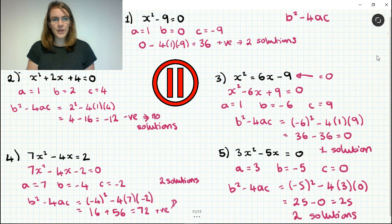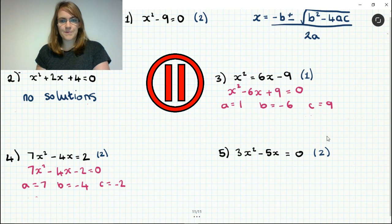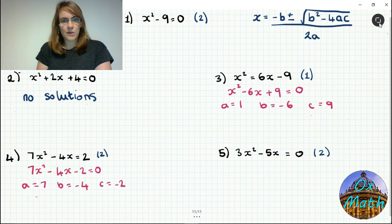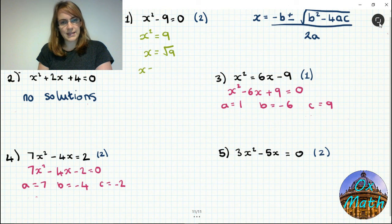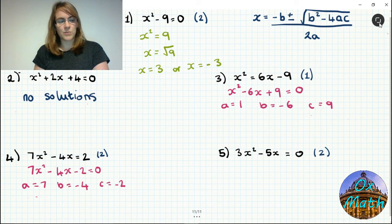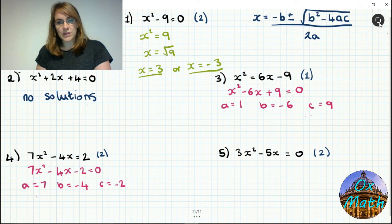Now pause the video and solve these equations. If they factorize, use factorizing; if not, use the quadratic formula. For the first equation there's no x term: we can rearrange to x squared equals 9, then x equals the square root of 9, giving x equals 3 or x equals minus 3. For number two there were no solutions, so there's nothing to solve. For number three, factorize x squared minus 6x plus 9 equals 0 — or use the quadratic formula.